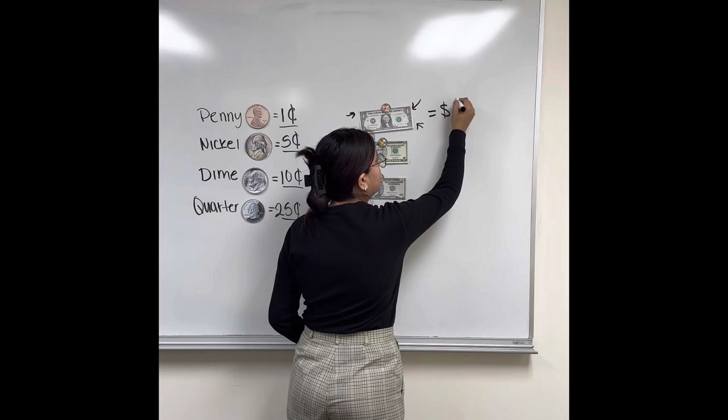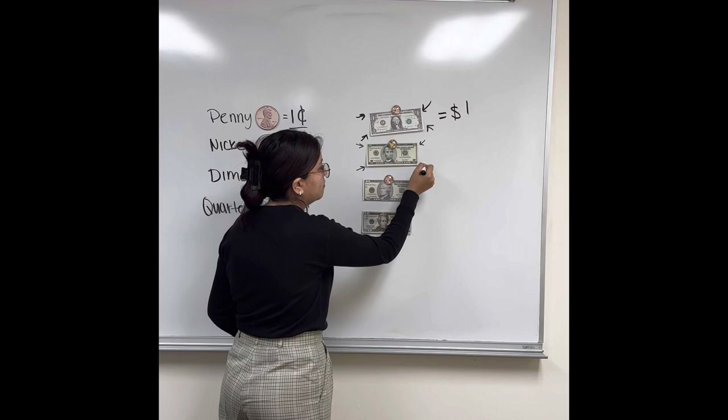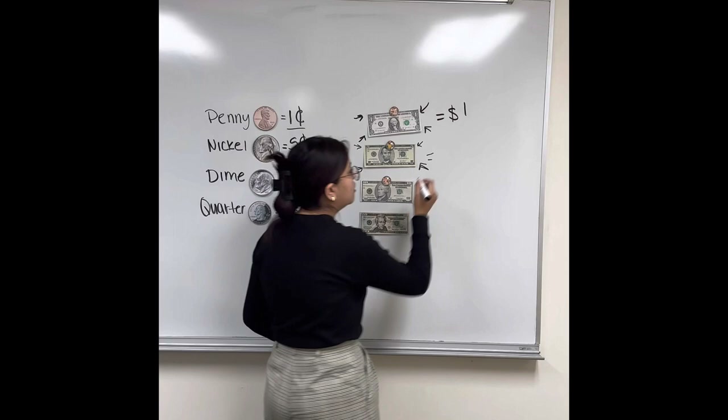So we're going to move to the next one. What number do we see here? Five. Good job. So what do you think the value is? Five dollars. Good job.